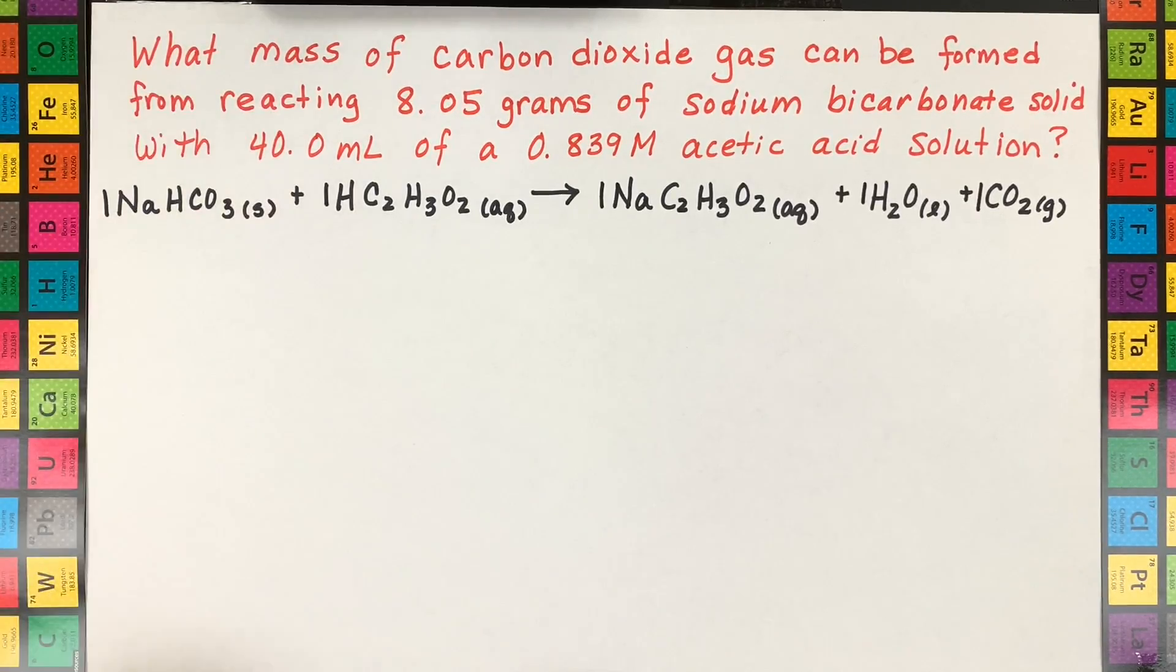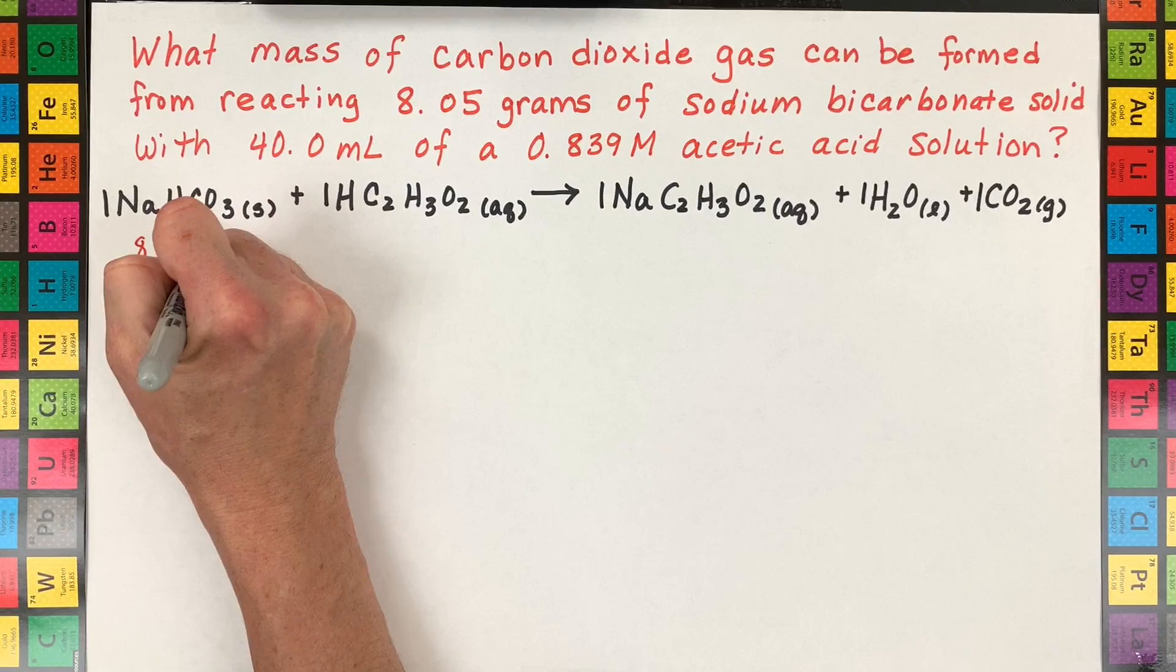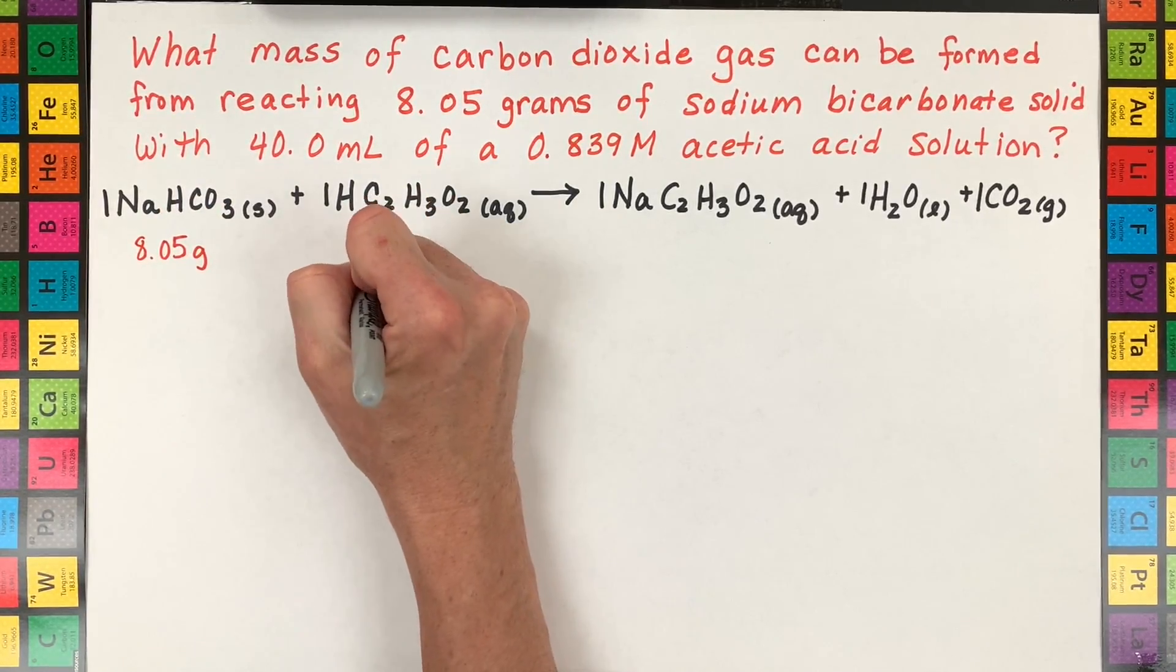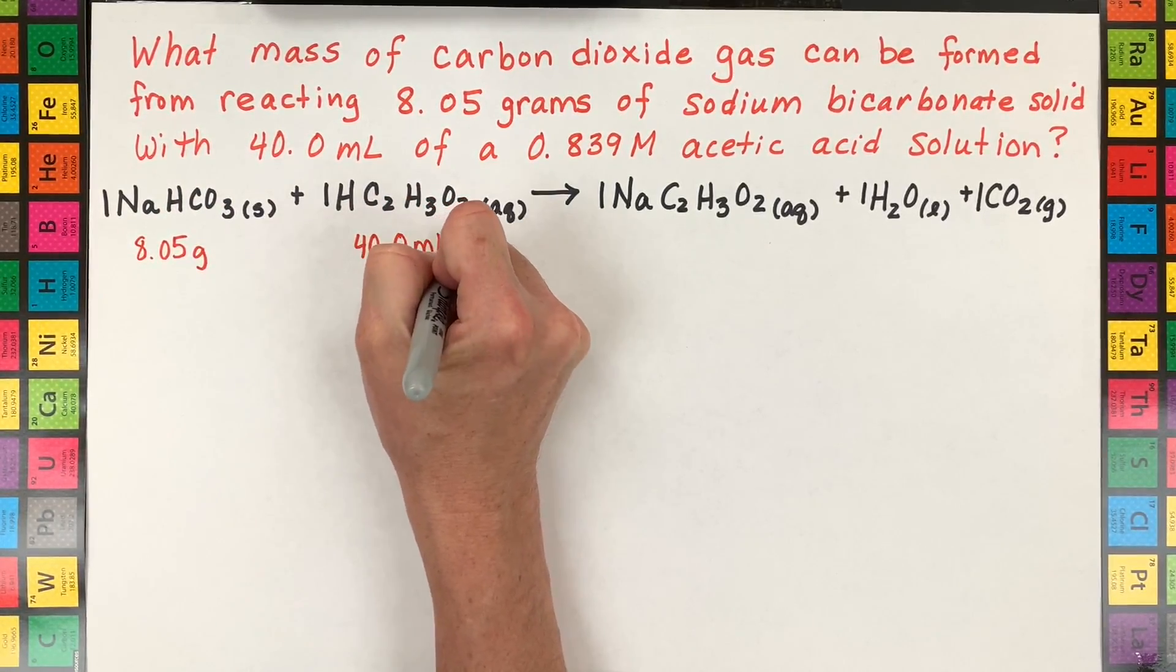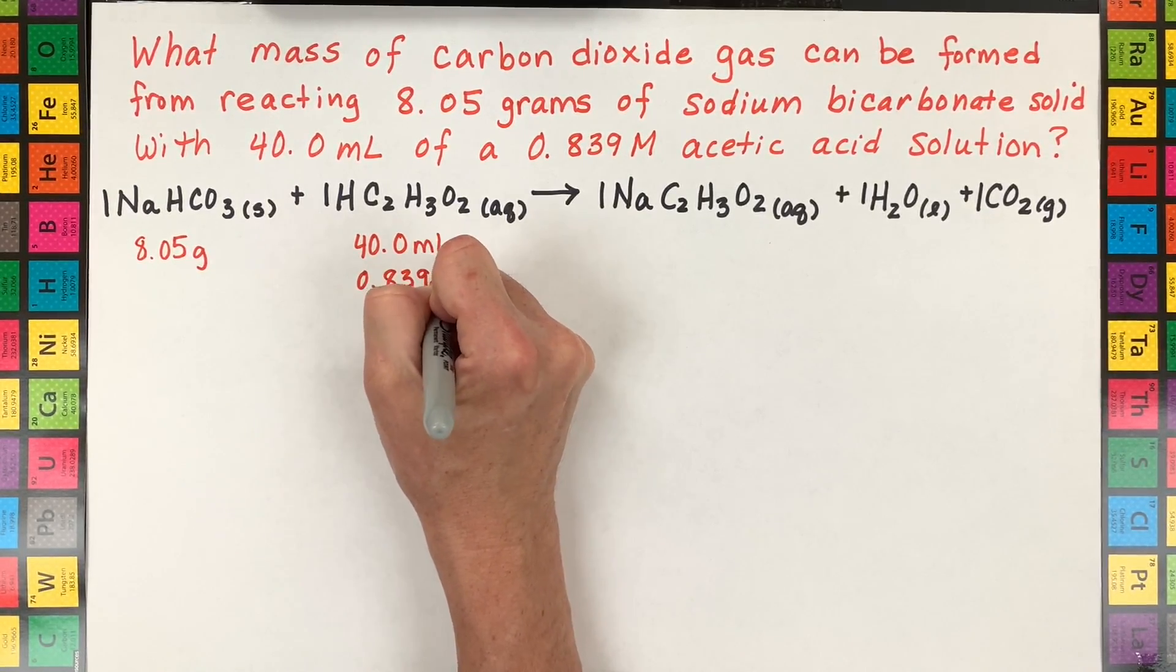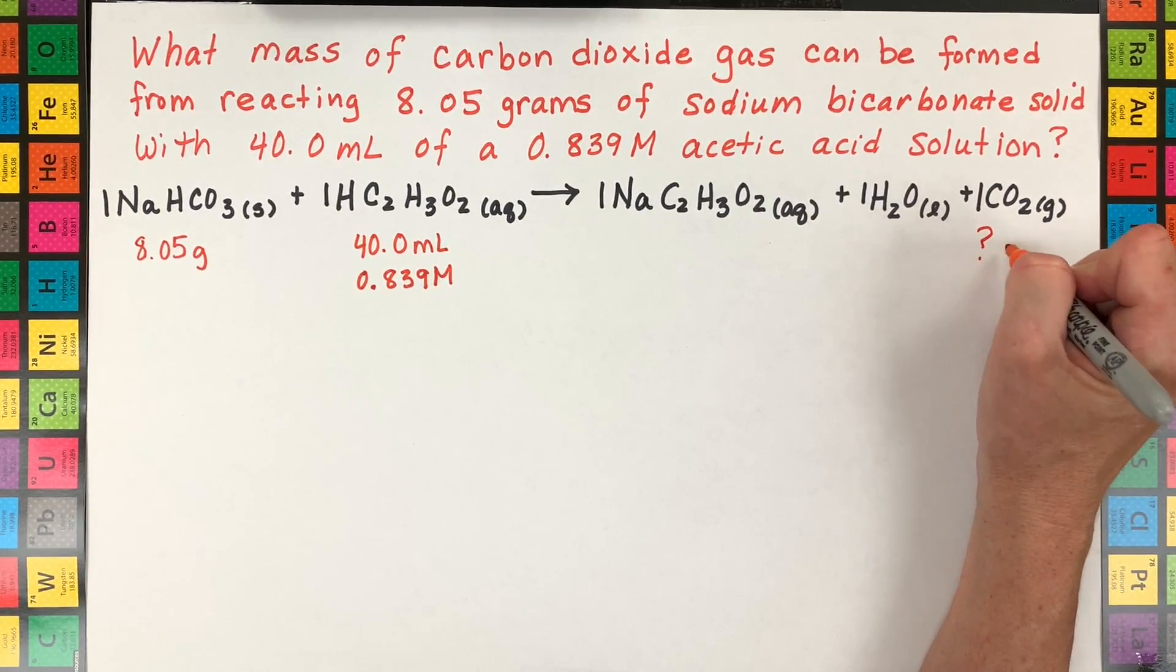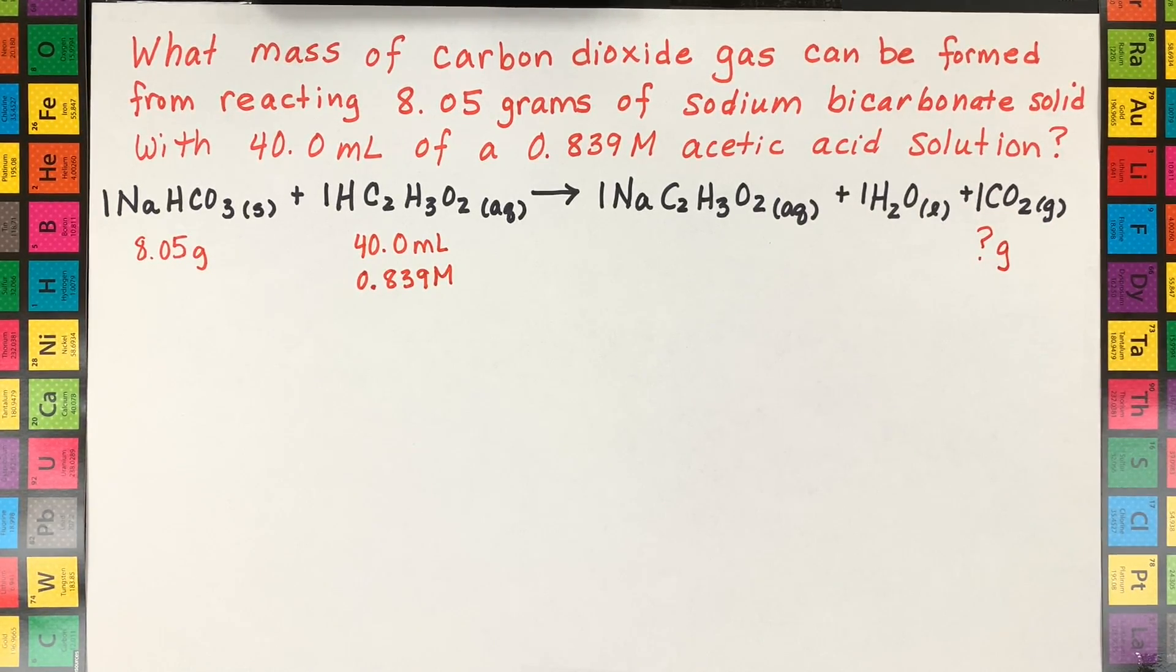So the next step is going to be writing down the given. So we had 8.05 grams that you saw reacting with approximately 40.0 milliliters of this acetic acid and this is nothing more than vinegar and this is the fairly accepted molarity for vinegar and then we're trying to find the mass of the CO2. Later in the experiment I ran it again and we'll find an experimental mass of CO2 and create a percent error at the very end of this video.